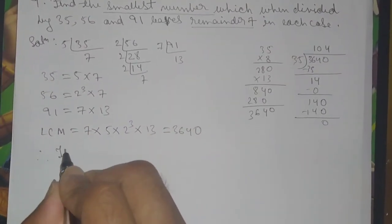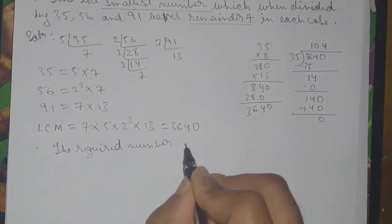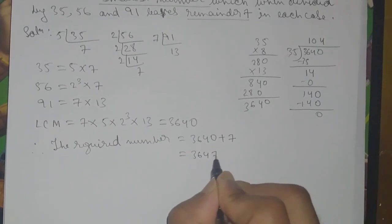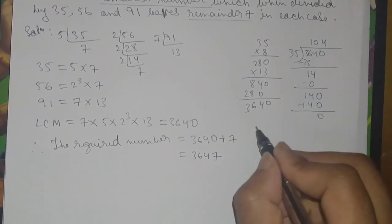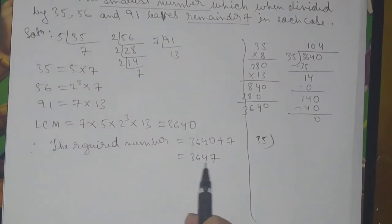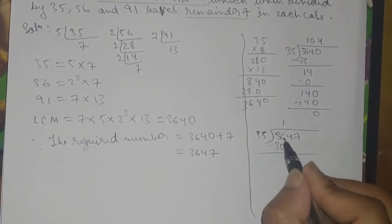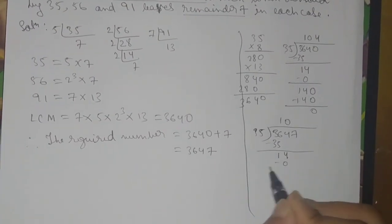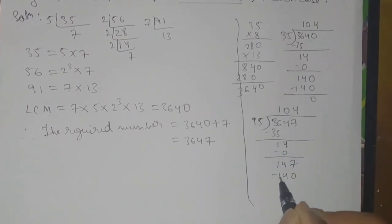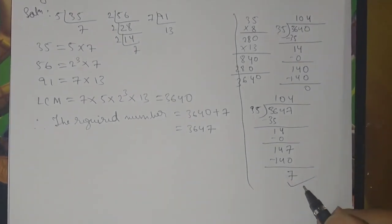So therefore the required number is equal to 3640 plus 7, which is equal to three thousand six hundred and forty seven. Checking: 3647 divided by 35 — 35 into 104 is 3640, remainder 147 minus 140 equals 7. Remainder is seven, so the answer is correct.